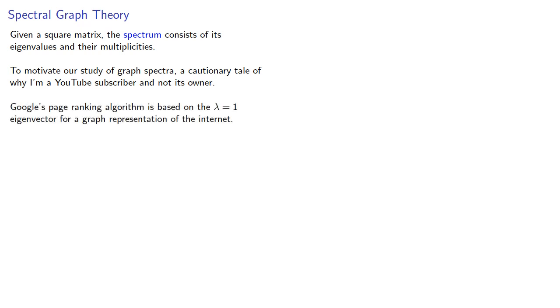Google's page-ranking algorithm is based on the lambda equals one eigenvector for a graph representation of the Internet. Any mathematician could have invented Google, but they didn't.